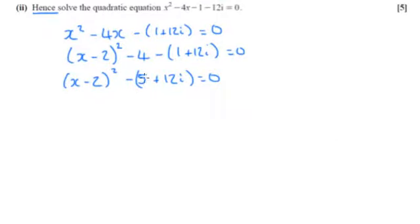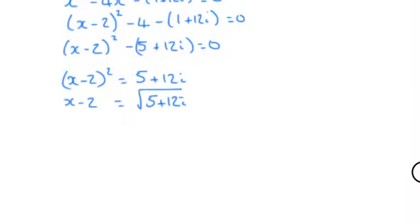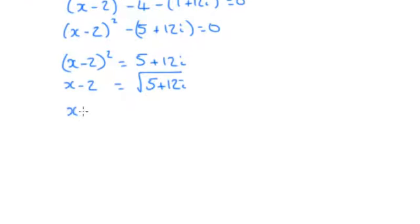I can now move all of this to the right-hand side, so it will become positive. And then x minus 2 is going to be equal to the square root of 5 plus 12i, which we've just worked out. So that was equal to plus or minus 3 plus 2i.